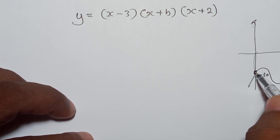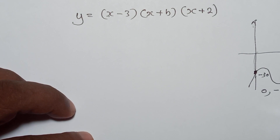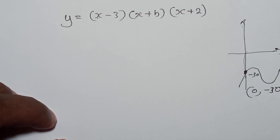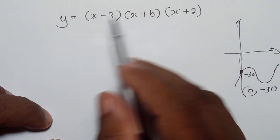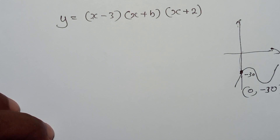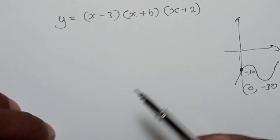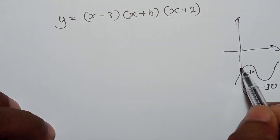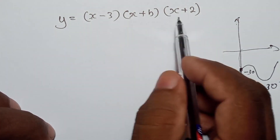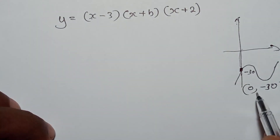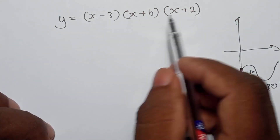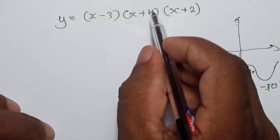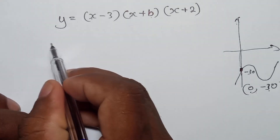So the coordinate of this point is (0, minus 30). We are cutting the y-axis at this point, so we can substitute this x and y value into the function. Whether they give you a point coordinate or describe the intercept, you substitute that coordinate into the function to find the unknown. Here x is 0 and y is minus 30, so substitute those values into the graph's function to get the value of b.